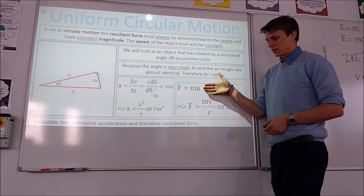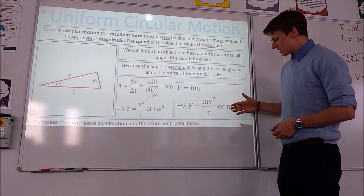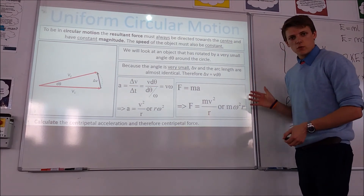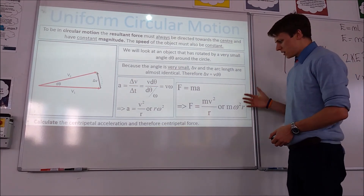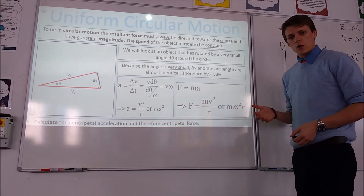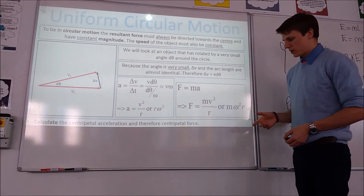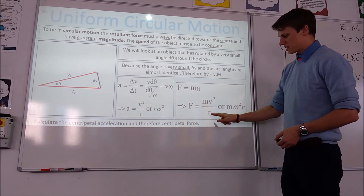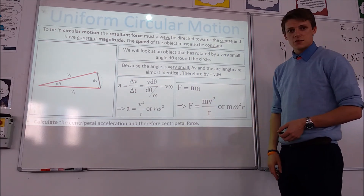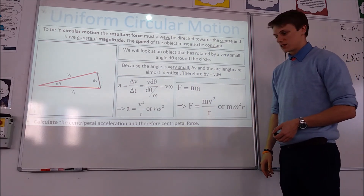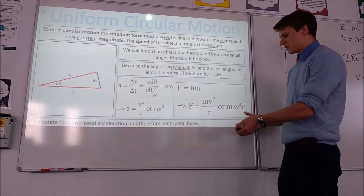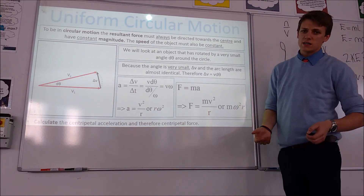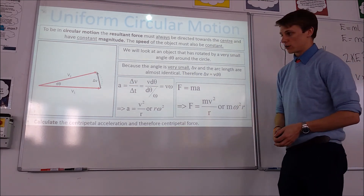Using Newton's second law, we get two expressions for the centripetal force required to make an object of mass m go in circular motion: F = mRω² and F = mV²/R. These let us work out what force is required in different scenarios.